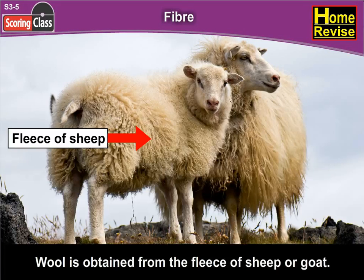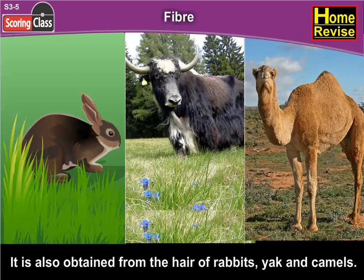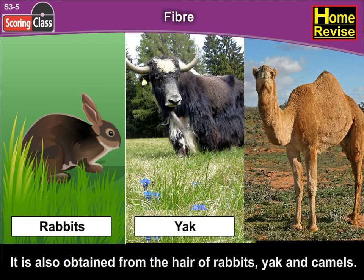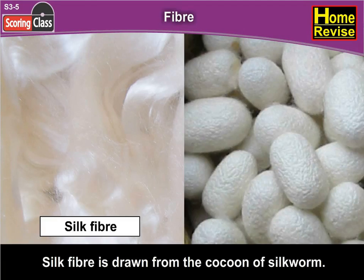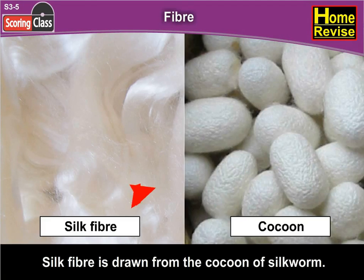Wool is obtained from the fleece of sheep or goat. It is also obtained from the hair of rabbit, yak and camel. Silk fibre is drawn from the cocoon of silkworms.